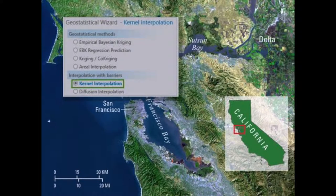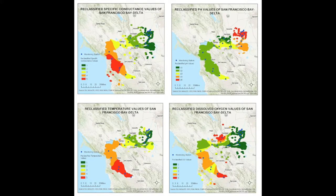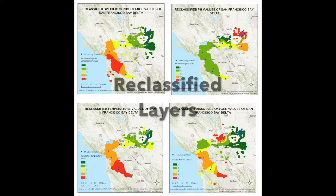Using kernel interpolation, we were given a range of values symbolized by different colors to indicate dissolved oxygen, temperature, pH, and specific conductance water quality levels. These figures show the kernel interpolation layers of the four different parameters within the San Francisco Bay Delta area. Following this, we manually reclassified the data onto a similar scale to rank habitat suitability, changing the values to a scale of 1 to 5, with 1 being the most suitable and 5 being the least suitable. We did this for all four water quality characteristics to prepare to weigh the layers.